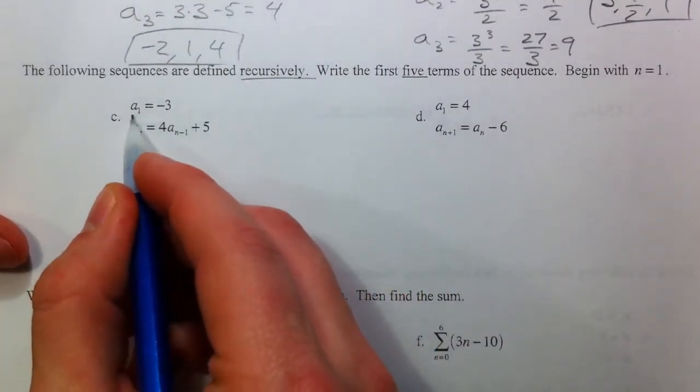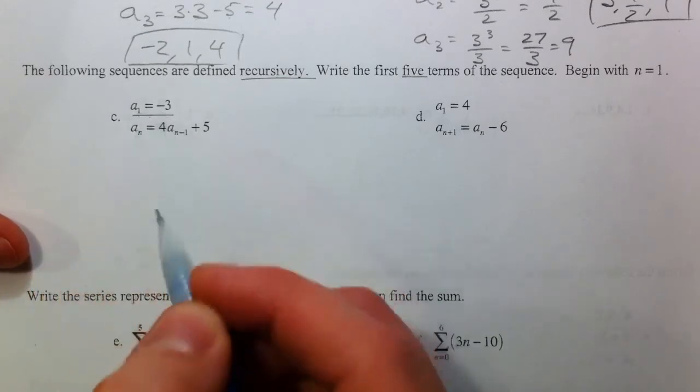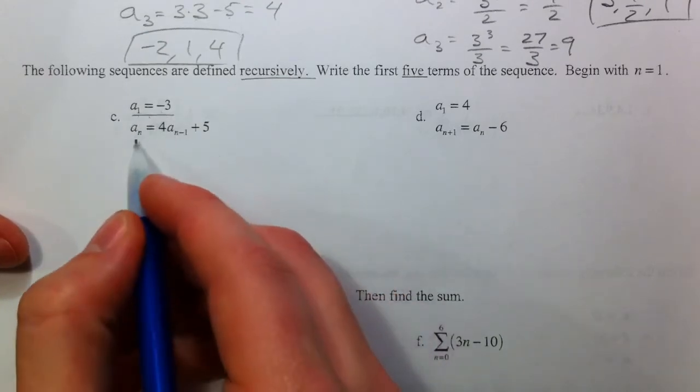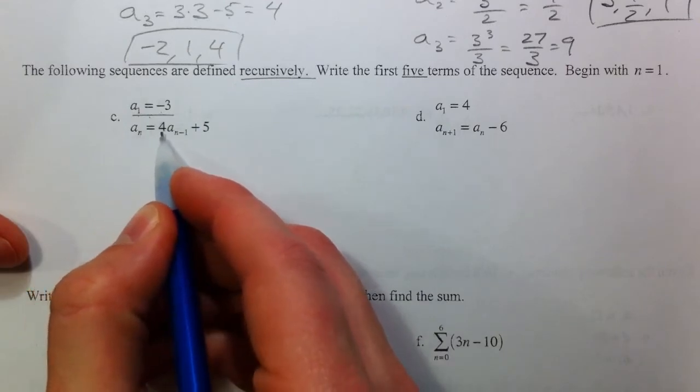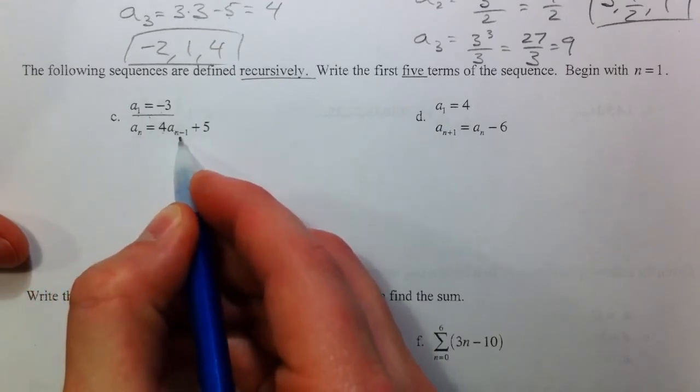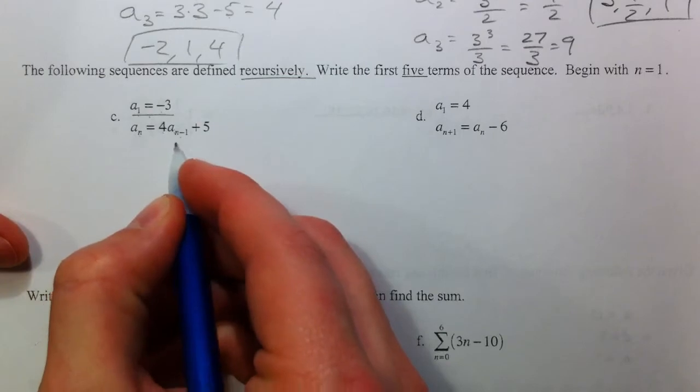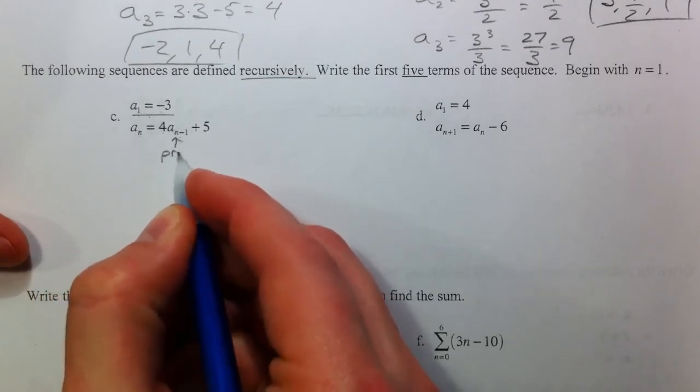So first they give us where to start. a sub 1, our first term is negative 3. And a sub n is defined as 4 times a sub n minus 1. So for example, this is really just the previous term.